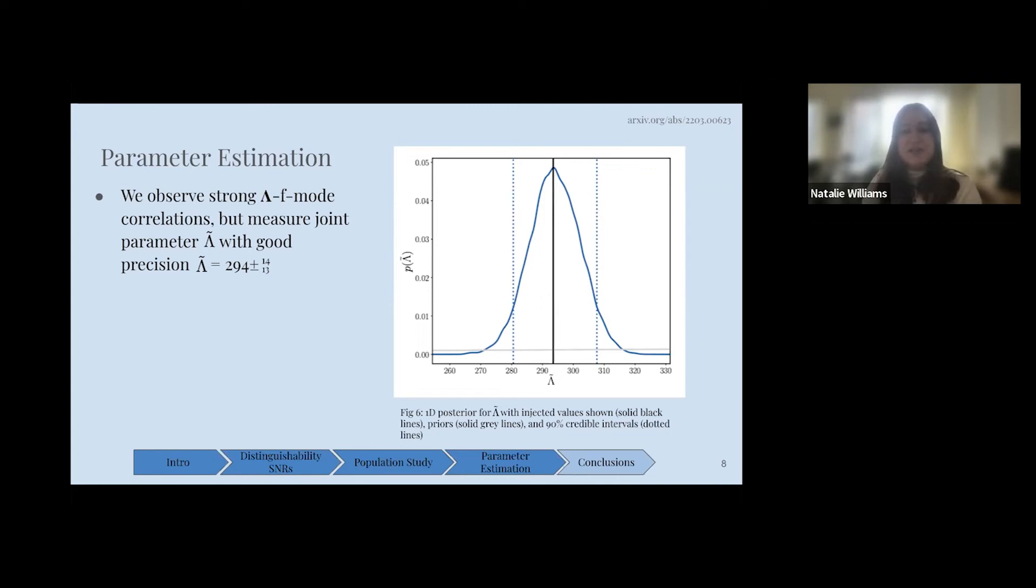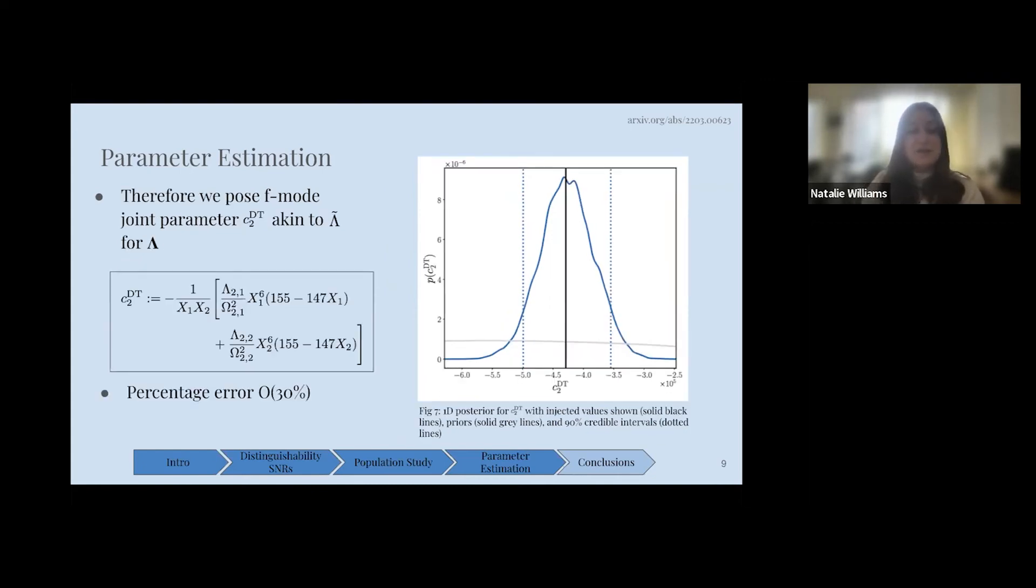We pose that we can do this as well for our F-mode frequencies, and we pose a joint parameterization for the F-mode frequencies. We take this directly from our waveform model - this is just the pre-factor in our waveform model. And we measure much better our F-mode frequencies here. We pose that maybe in the future it would be better to measure with a joint parameterization when looking at the F-mode frequencies.